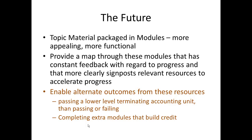I've written this in a different colour because the first reaction could well be that this is not possible — but I'd like to flag it nonetheless. It should enable alternate outcomes from people using these resources. It may be passing a lower-level terminating accounting unit, rather than just failing the unit. Students could also complete extra modules that build credit. What's a terminating accounting unit? Let me take a brief moment to explore that.